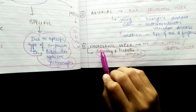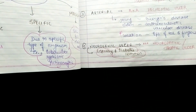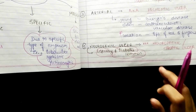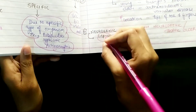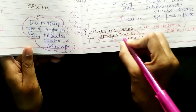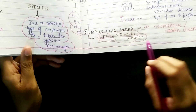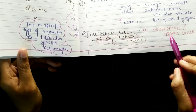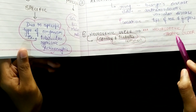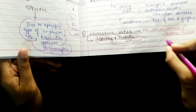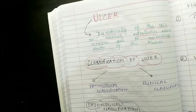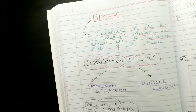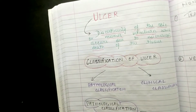The fourth type is neurogenic ulcer, most common in patients suffering from leprosy and diabetes. It is also known as neuropathic or trophic ulcer — trophic ulcer is its famous name to remember.